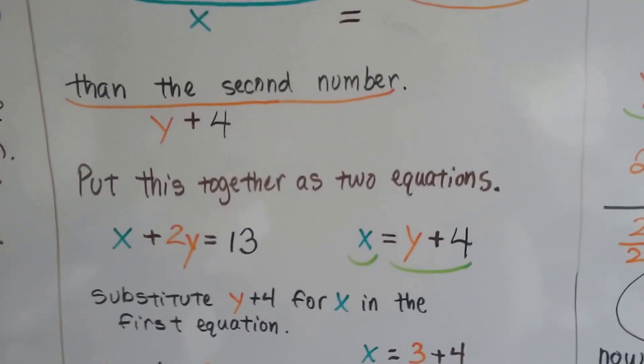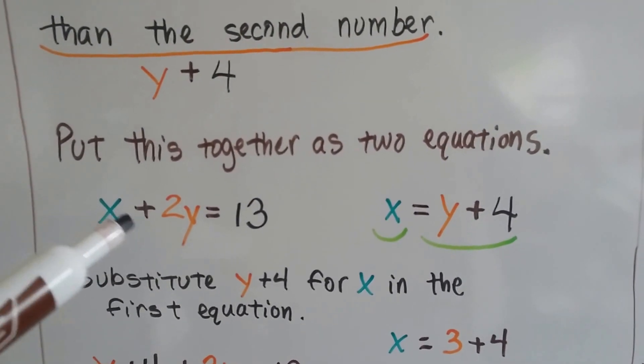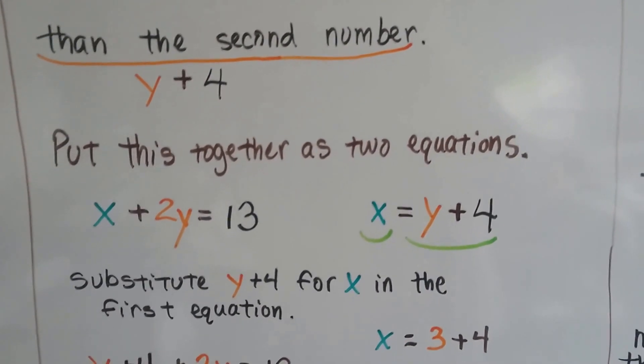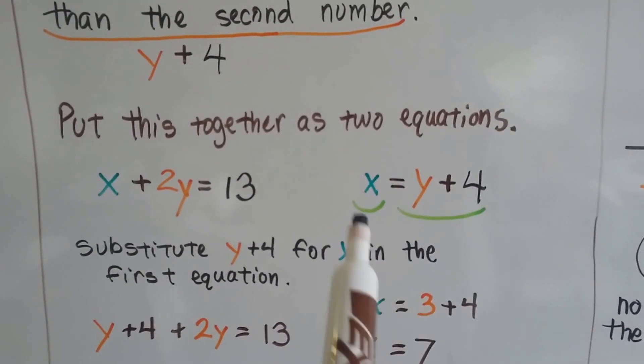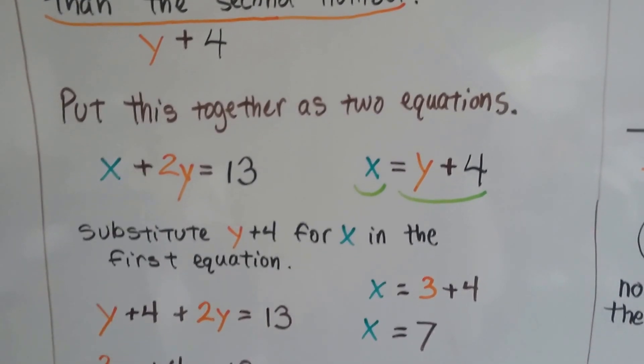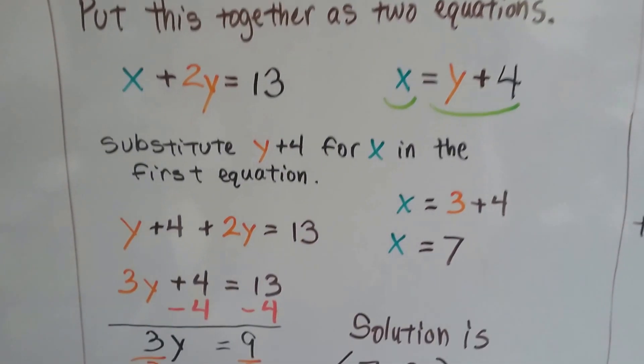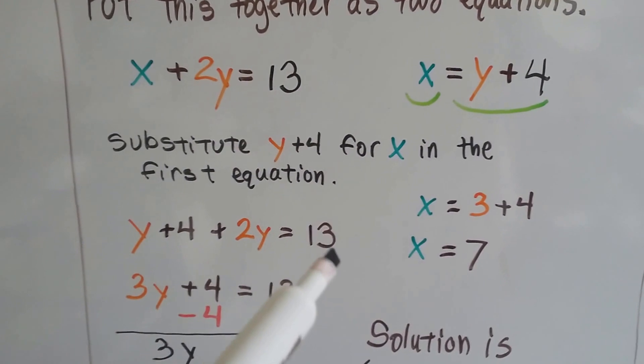Now we have our two equations. We have our system of two equations. We put this together and we've got x plus 2y equals 13 and x equals y plus 4. Now this y plus 4 can be substituted for x in this equation. So instead of writing this x here, we write y plus 4.